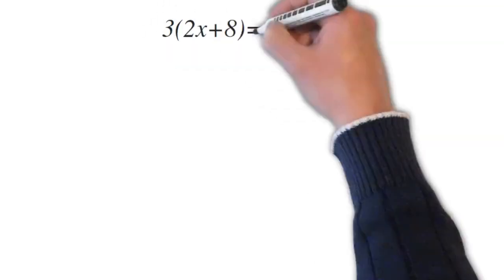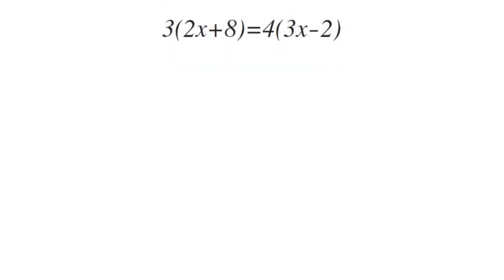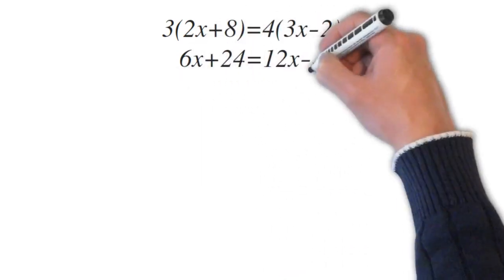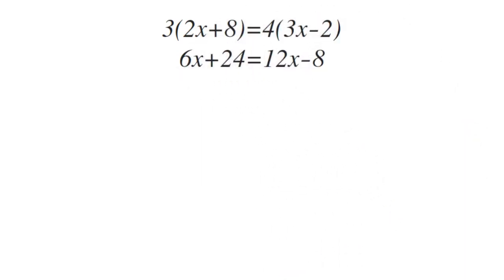Now let's look at a more complicated problem with distributive property. If you forgot how to do distributive property, make sure you look at the video on that. We're going to distribute 3 times 2x and 3 times 8 on the left side, and 4 times 3x and 4 times negative 2 on the right side. That gives us 6x plus 24, which equals 12x minus 8.